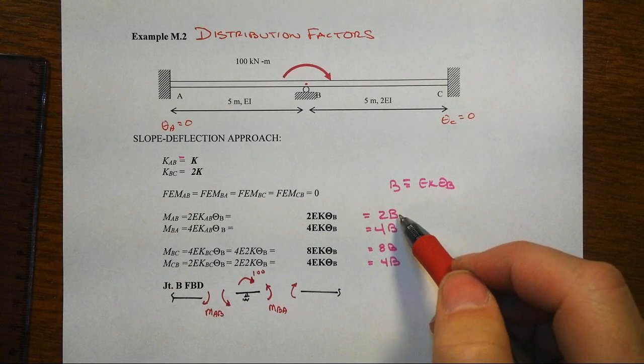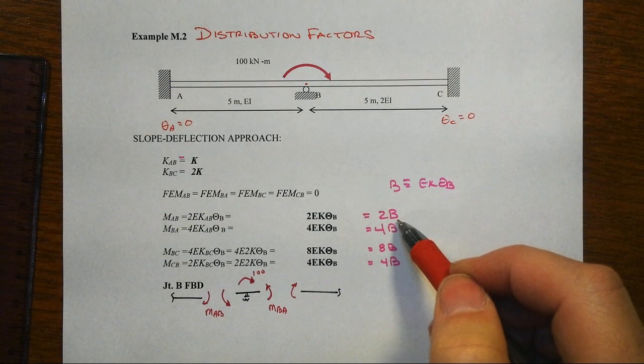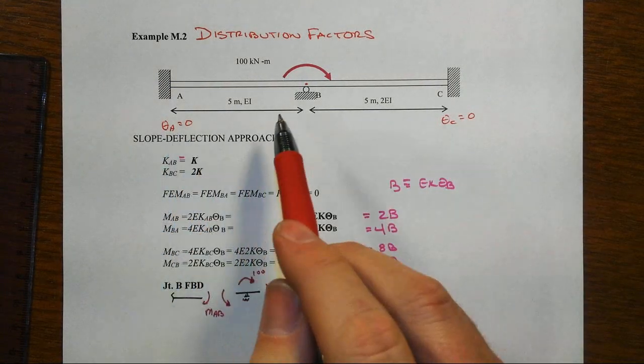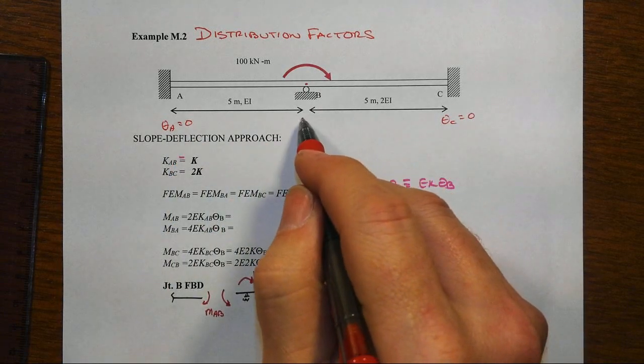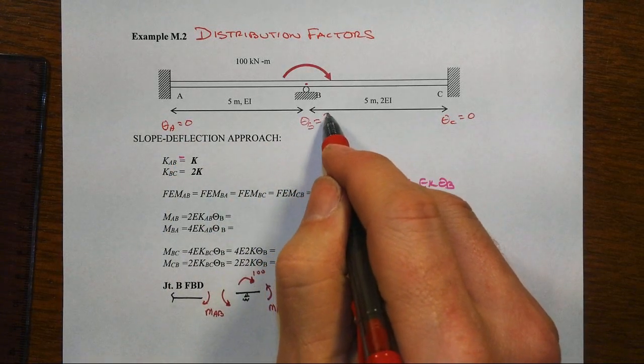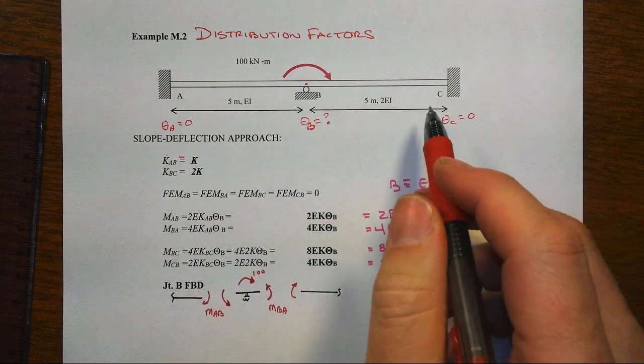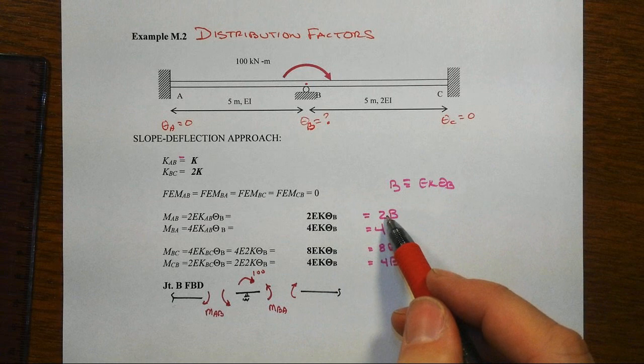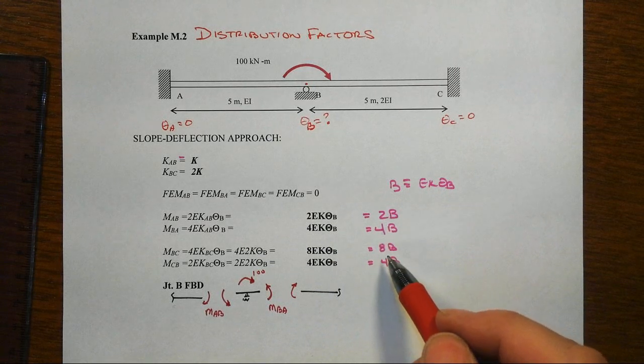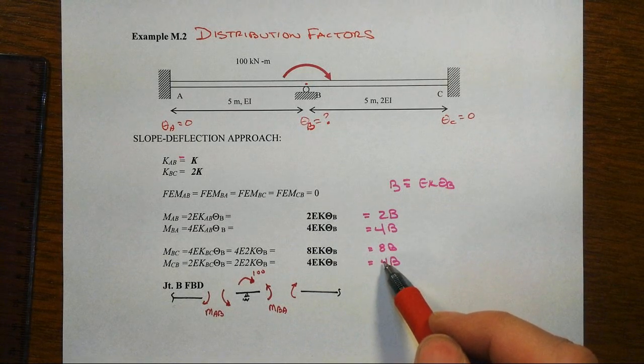So of course MBA is twice as much as MAB given the pattern here of theta A being equal to 0, but theta B not being known. And then of course we've got theta C being equal to 0, but twice as much stiffness, so we still end up at this ratio 2 to 4, but then we have 8 to 4 here.